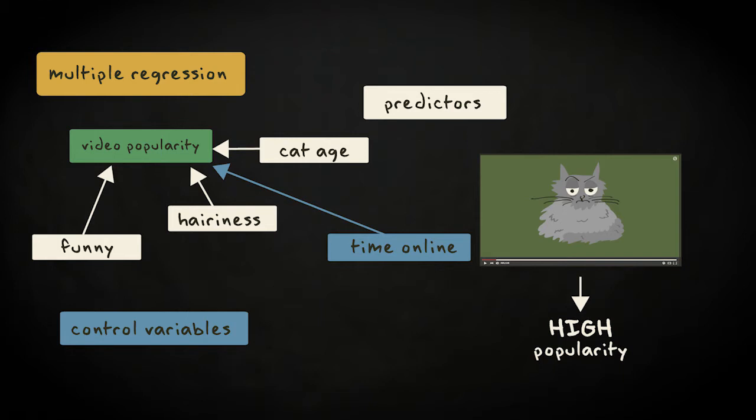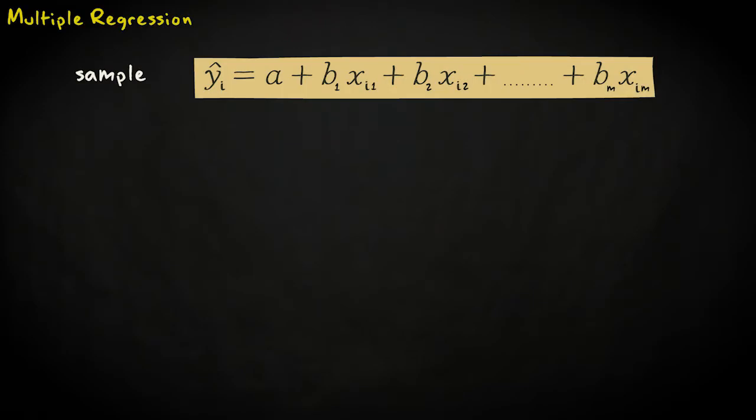Okay, so what does the model look like? Well, it's an extension of the simple linear model. At the sample level, we express it as y hat sub i equals a plus b sub 1 times x sub i sub 1 plus b sub 2 times x sub i sub 2, and so on, until we reach the last predictor, denoted m. So we end with b sub m times x sub i sub m.